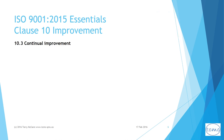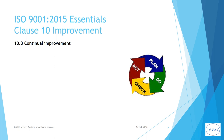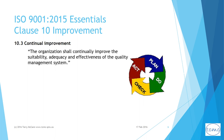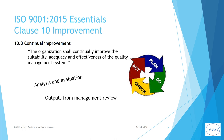10.3 continual improvement. The standard requires an organization to keep improving its QMS for suitability, adequacy, and effectiveness. Top management has a very specific responsibility here — with management reviews they do not necessarily have to do stuff personally, but it is their responsibility to lead the way and to make sure that needs and opportunities are identified and continual improvement takes place.